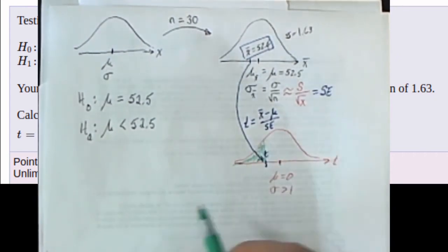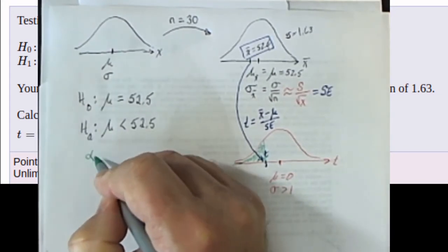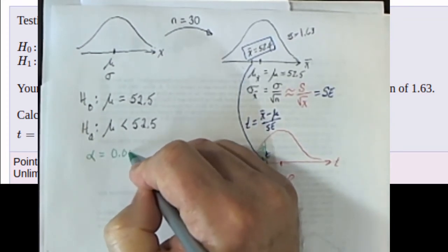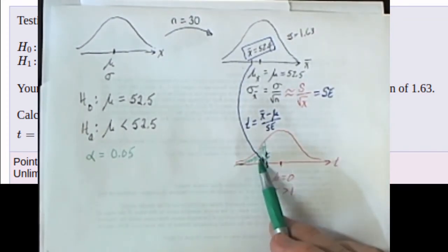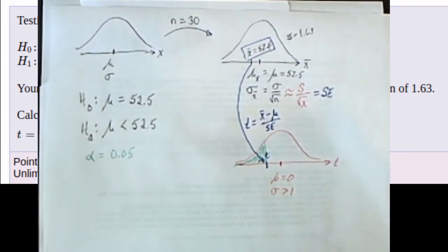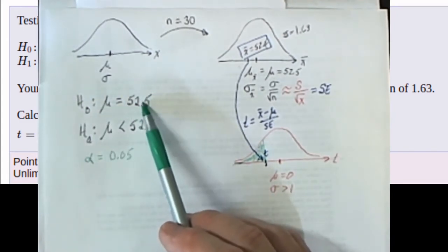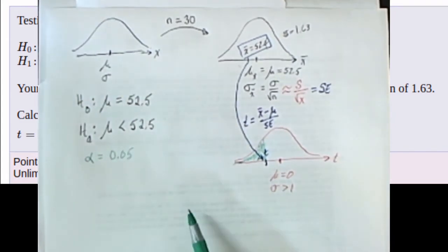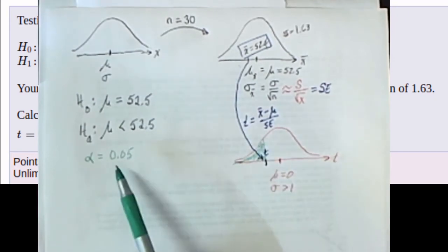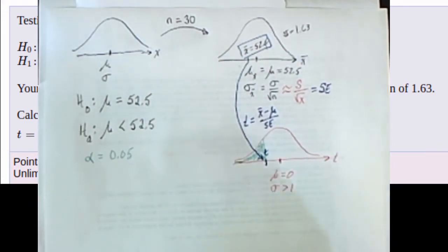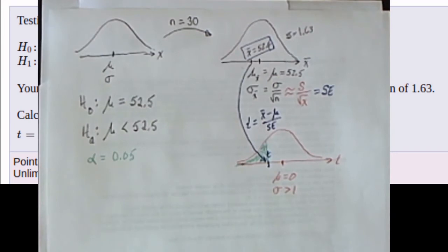If that probability is less than alpha — alpha might be stated, and if not we assume alpha is 5% — then an unusual thing happened assuming the null was true, and we reject the null hypothesis. On the other hand, if that area is not less than alpha, we fail to reject the null hypothesis. Step one was to decide whether we're looking at a mean or a proportion.